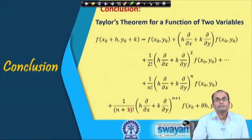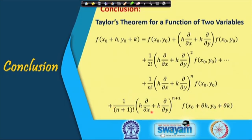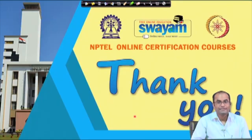In summary, we have learned Taylor's theorem for a function of two variables, which is the extension of the single-variable case. We expand the function value at a point (x₀+h, y₀+k) in terms of first-order, second-order, and higher-order partial derivatives at (x₀,y₀), plus a remainder term useful for estimating approximation errors. Thank you very much.